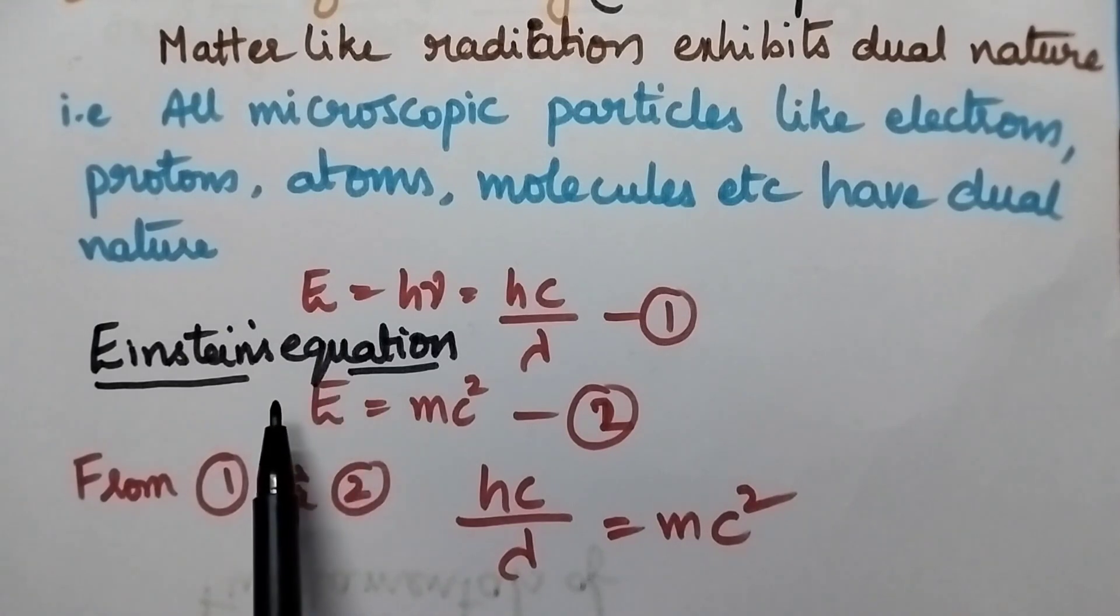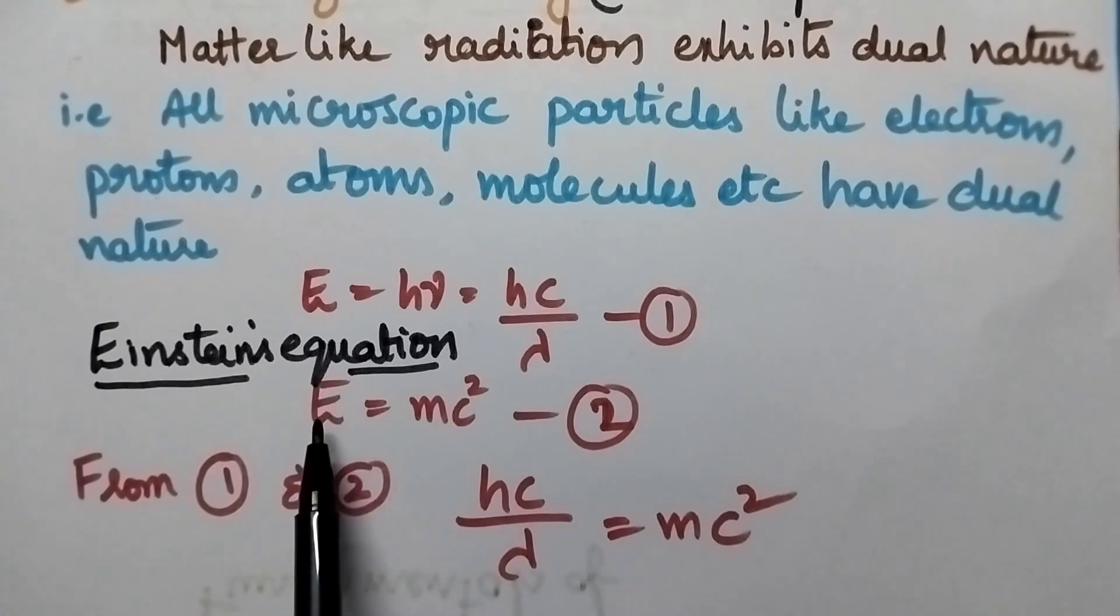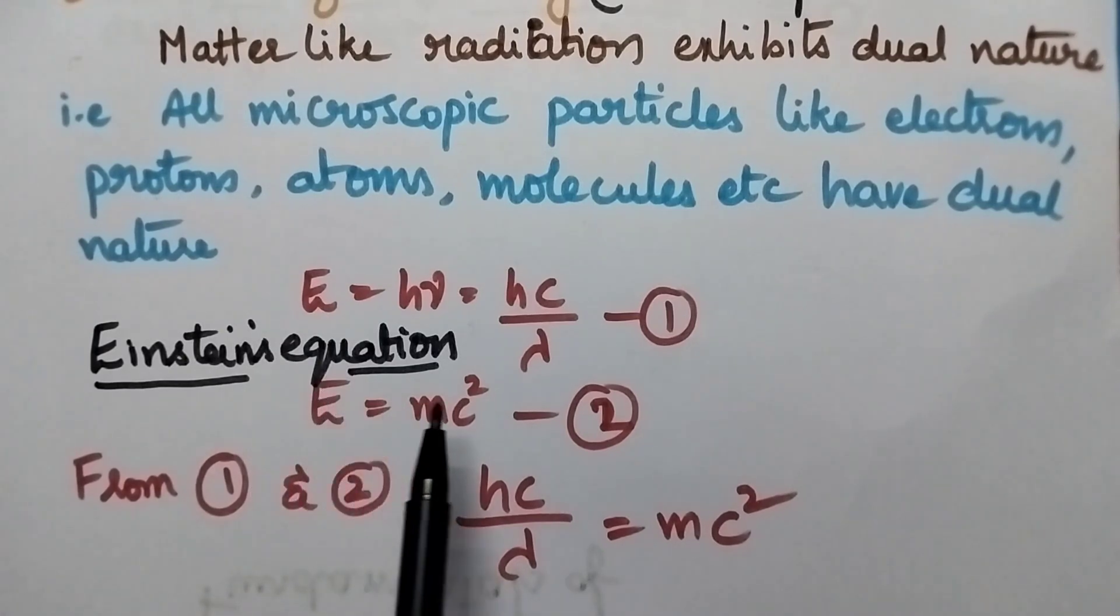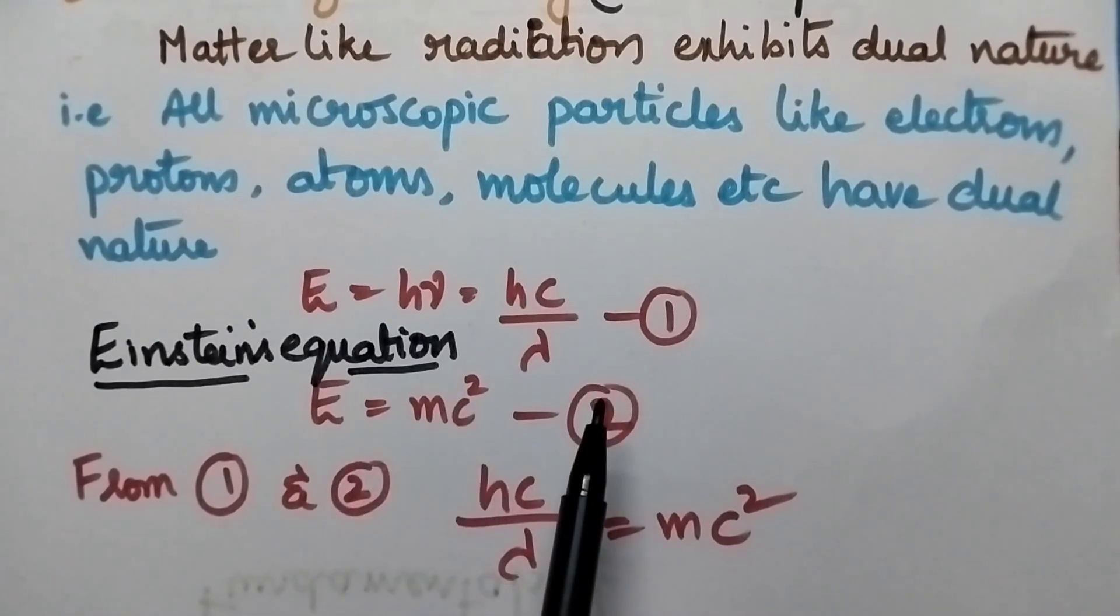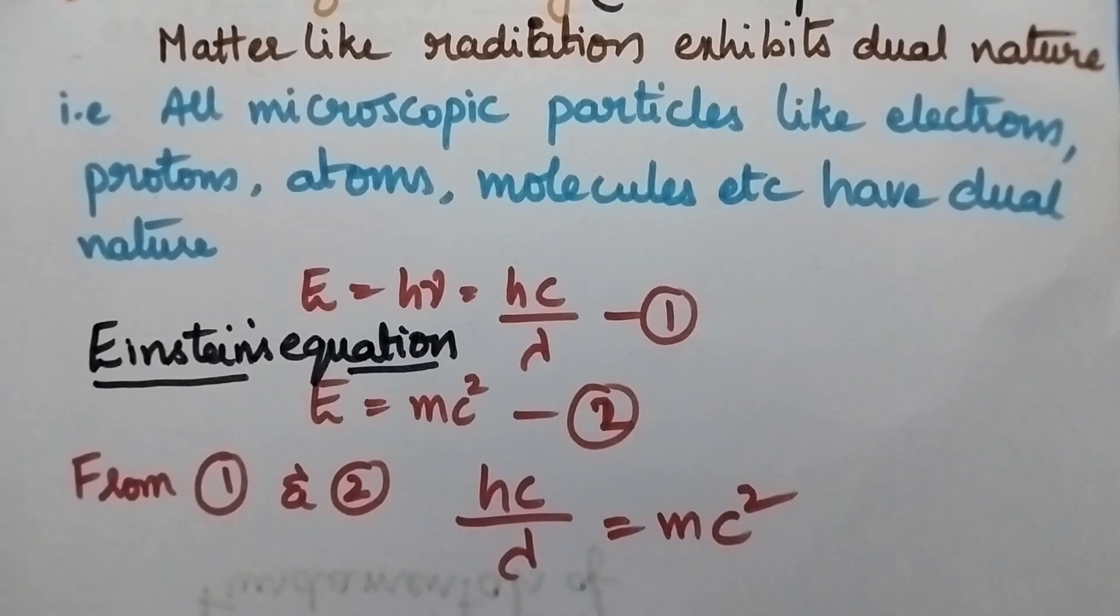According to Einstein's equation, the relation between energy and velocity is E equals mc squared. So from equations 1 and 2, hc by lambda equals mc squared.